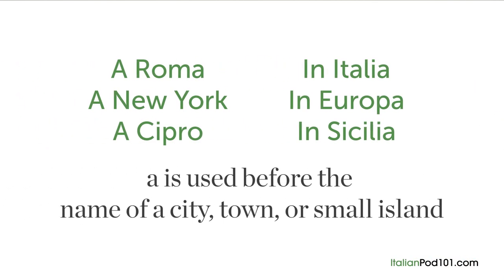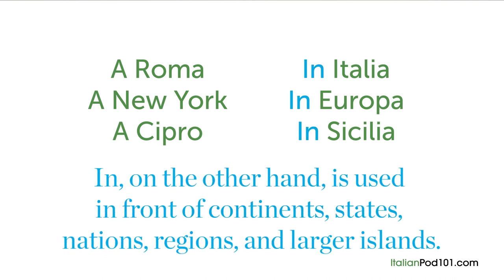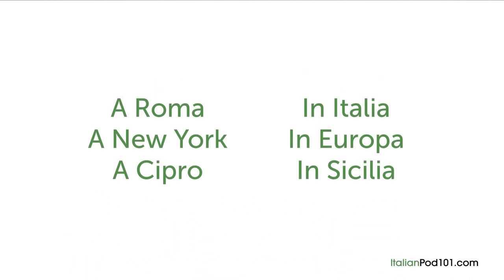The first point to remember is that A is used before the name of a city, town, or small island. IN, on the other hand, is used in front of continents, states, nations, regions, and larger islands. So you'd say 'a Roma,' 'a New York,' 'a Cipro,' but 'in Italia,' 'in Europa,' 'in Sicilia.' We also use IN before the name of a street or square: 'Abito in Via del Corso' — I live in Via del Corso.